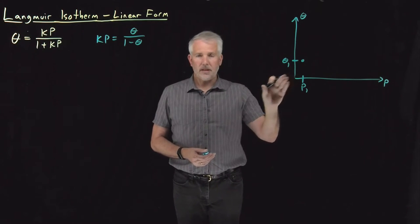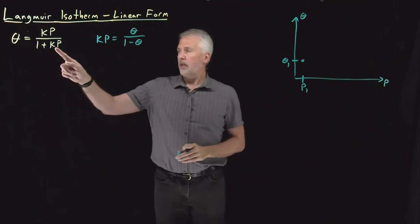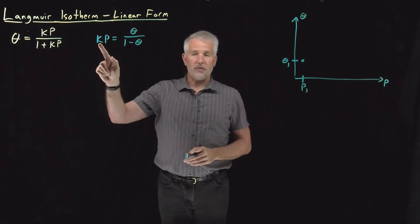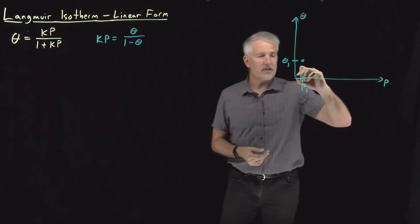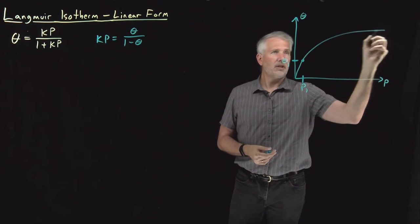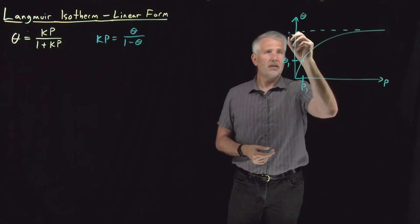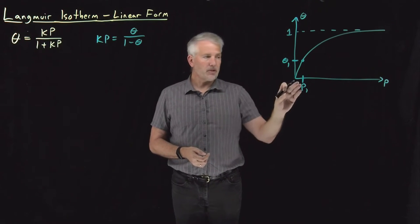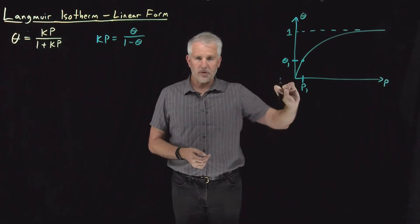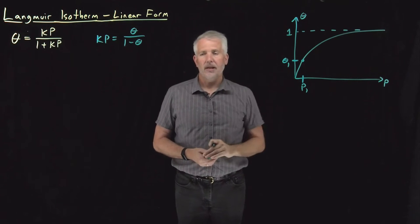It turns out that's enough information to use this equation to solve for k, and once I know k, I know the whole curve. So essentially what that means, there's exactly one of these isotherms that passes through that point, and that's convenient because all we need to do in principle is make one measurement and we know everything about the entire isotherm.